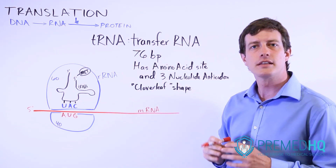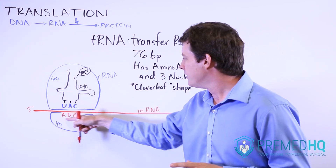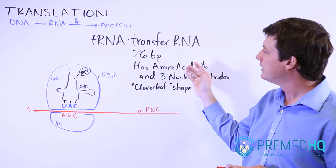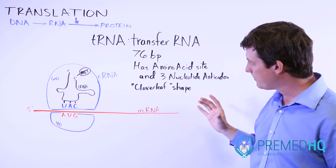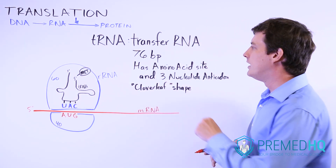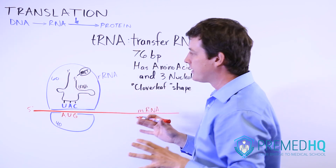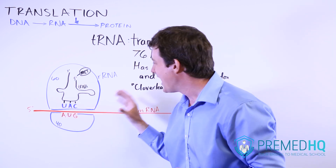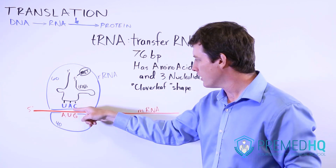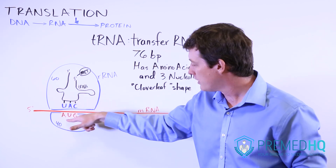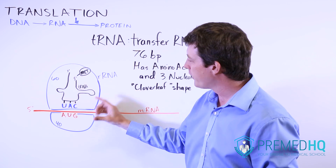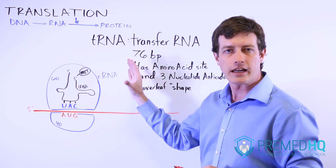Transfer RNA is something that enables you to link the nucleotide sequence to actual amino acids. A tRNA molecule is around 76 base pairs long, and it has an amino acid site on the five prime end that contains an amino acid. It also has a three nucleotide anticodon, which helps it recognize the appropriate site on the mRNA. Notice that the anticodon is the complementary sequence to the codon — in this case, it's the AUG start codon — and the anticodon will bind with that, allowing you to match a specific codon with the amino acid being added to the chain.